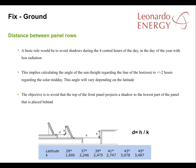That means calculating the height of the sun above the horizon to plus or minus two hours at solar midday. The angle will vary depending on the plant's latitude. The objective is to avoid a situation where the tops of the front solar panels project a shadow onto the lowest parts of the panels placed behind.